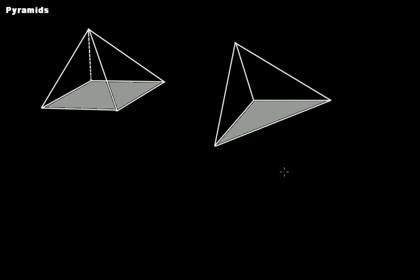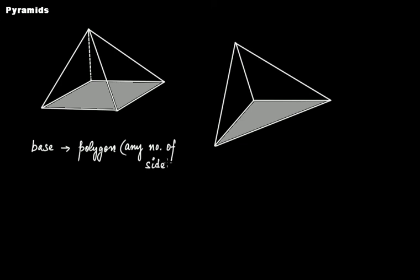Let's talk about pyramids. In the case of pyramids, the base can be any polygon, meaning it can have any number of sides. From each side of the base, you'll have a triangular face, and all the triangular faces will meet at a common vertex.